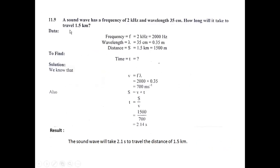Problem 11.9: A sound wave has a frequency of 2 kilohertz — converting the prefix 'kilo' gives 2000 Hz — and a wavelength of 35 centimeters. How long will it take to travel 1.5 kilometers? Converting units: wavelength = 35 cm ÷ 100 = 0.35 meters; distance = 1.5 km × 1000 = 1500 meters. So frequency = 2000 Hz, wavelength = 0.35 m, distance = 1500 m.